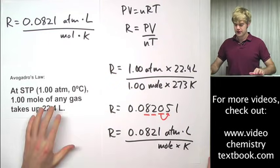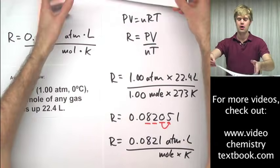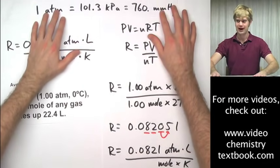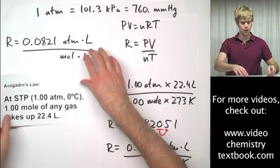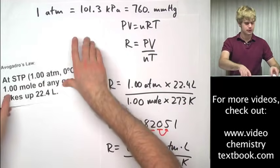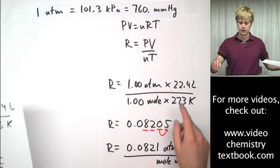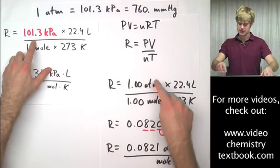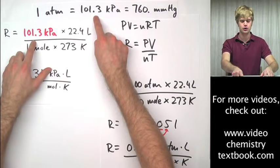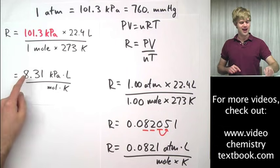The other Rs we can get in the exact same way using conversion factors for gases. I can set up R equals PV divided by nT and solve, for example, for kPa. Instead of one atmosphere, I'm going to put in 101.3 kPa. I do this math and I get 8.31.